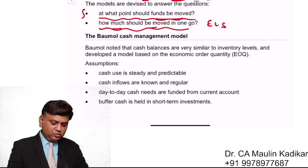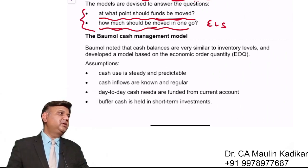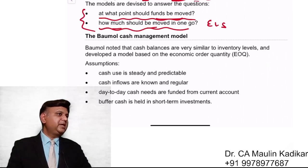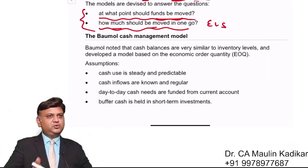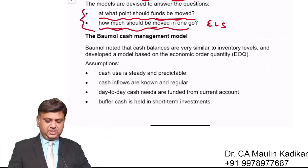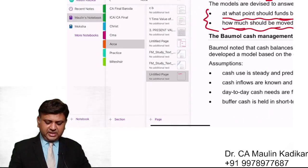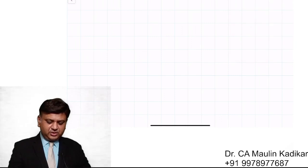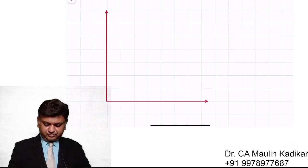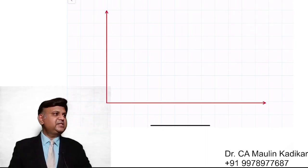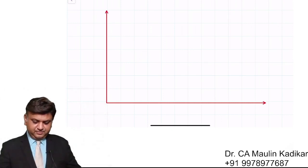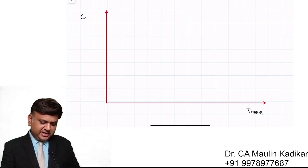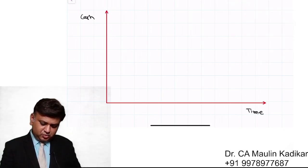In the Miller-Orr model, these two points are important — I will explain that gradually. First, we are talking about Baumol's model: what will happen, and when to transfer is not important right now. The X-axis represents the time period and the Y-axis represents the cash balance.